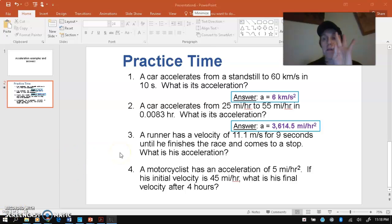Okay, so we're starting on number three. Now, this one's a little bit different. It says a runner has a velocity of 11.1 meters per second for nine seconds until he finishes the race and comes to a complete stop. What is his acceleration?